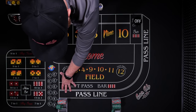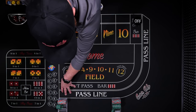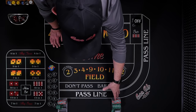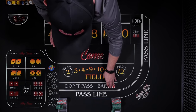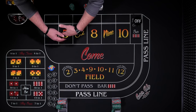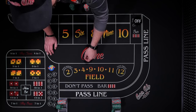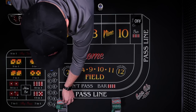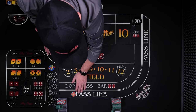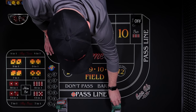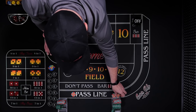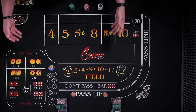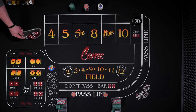We're going to roll out a five dollar player with a $300 bankroll and a ten dollar player with $600. If you're at a fifteen dollar table, just triple the amounts of the five dollar player. We'll start on the pass line — $5 and $10 — and let's see what happens.